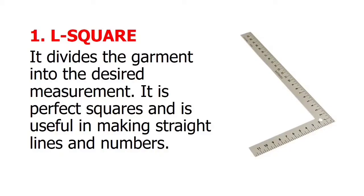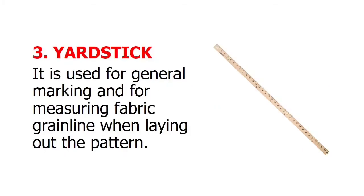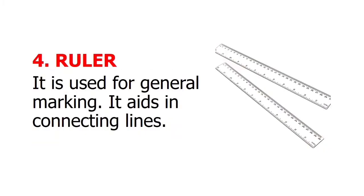L-square: it divides the garment into the desired measurement. It uses perfect squares and is useful in making straight lines and numbers. Tape measure: it is used in taking body measurements. Fiberglass tape is commonly used by professional dressmakers. Yardstick: it is used for general marking and for measuring fabric grain line when laying out the pattern.